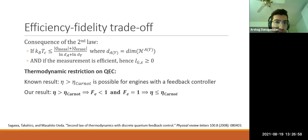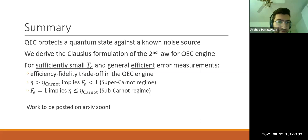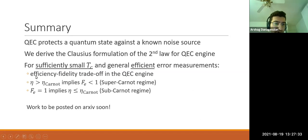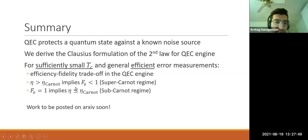To summarize: quantum error correction protects your quantum state from a known type of noise. If you take that noise to be thermal noise specifically, you can derive the second law inequality in a more generalized form than Clausius's formulation. We can then make a trade-off statement: for sufficiently small temperatures and efficient measurements, if you operate in the super-Carnot efficiency regime with our quantum error correcting engine then your fidelity suffers; if you want perfect fidelity you must operate in the sub-Carnot regime even though engines with feedback are technically allowed above it. The work will be posted on arXiv soon, hopefully within the next two weeks.